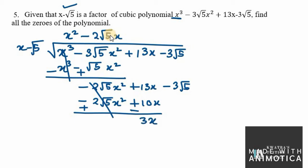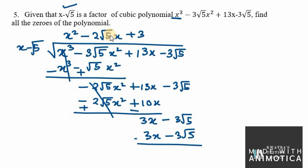So 13x minus 10x equals 3x minus 3√5. We then multiply by 3, giving 3x minus 3√5, and after changing signs both terms become zero. So the quotient is x² minus 2√5 x plus 3.